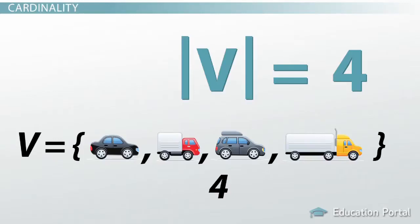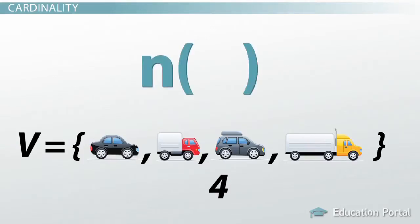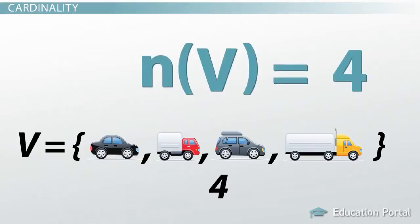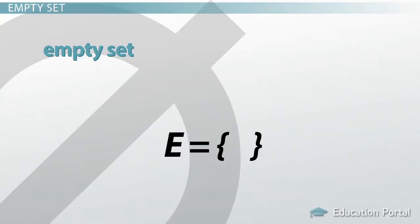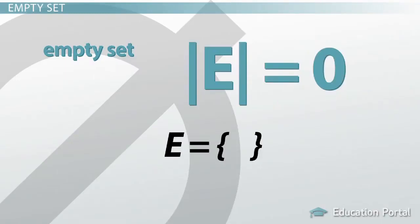The second way to write cardinality is with an N and then the set in parentheses. In symbols: n(V) = 4. The cardinality of set V is four. An empty set is one that is empty — it doesn't have any elements. Let's say set E is an empty set. The cardinality of set E is zero, written as |E| = 0. Be warned: zero is not an element in the set; it simply means the set has no elements.